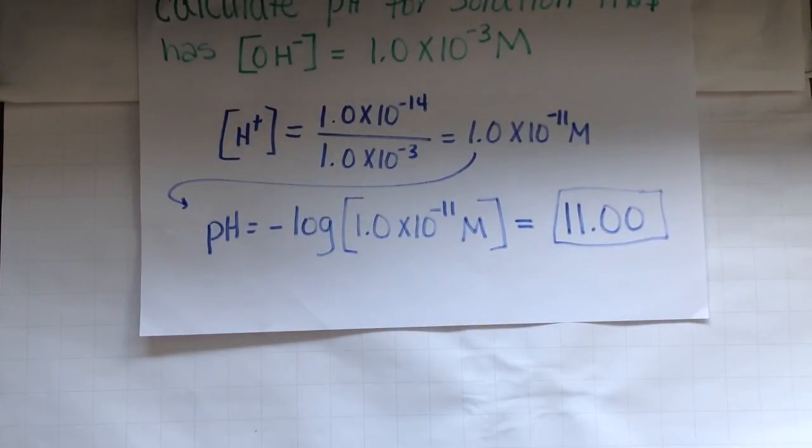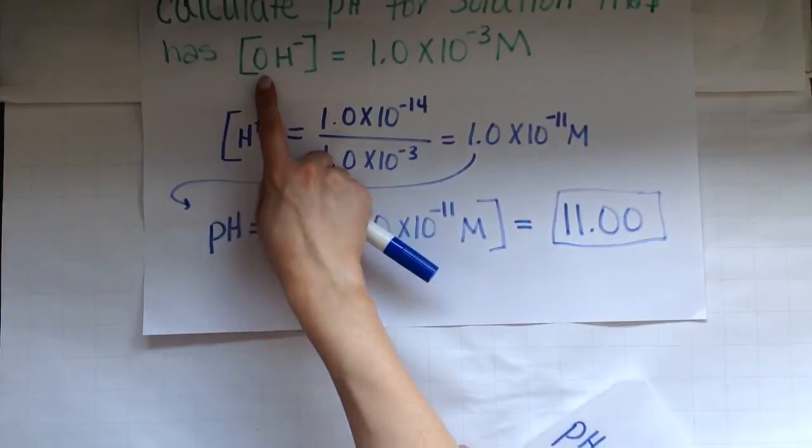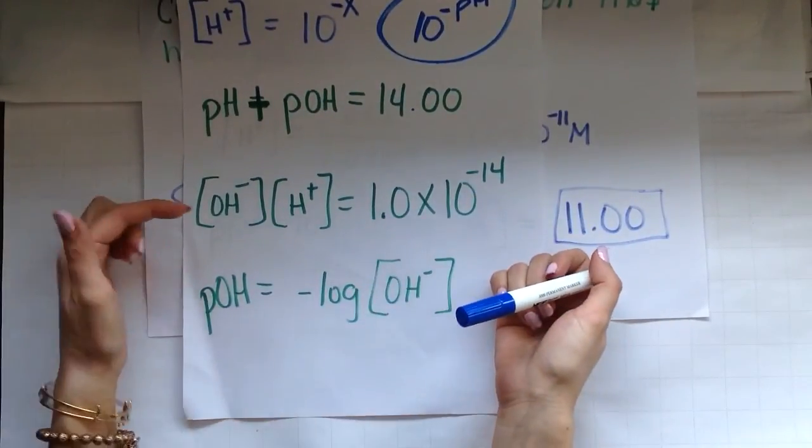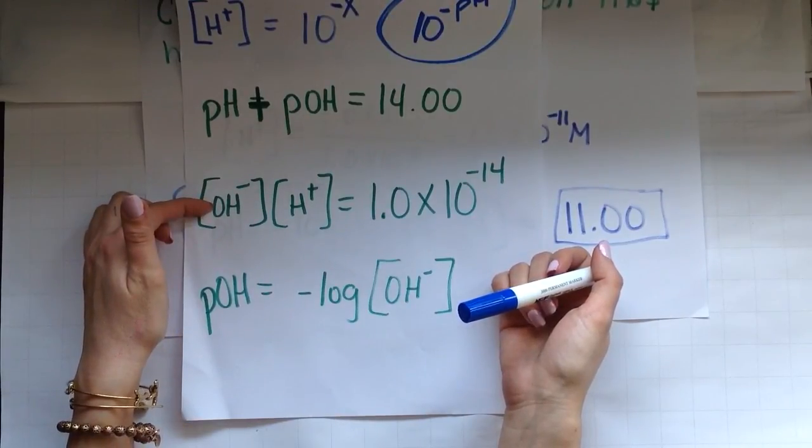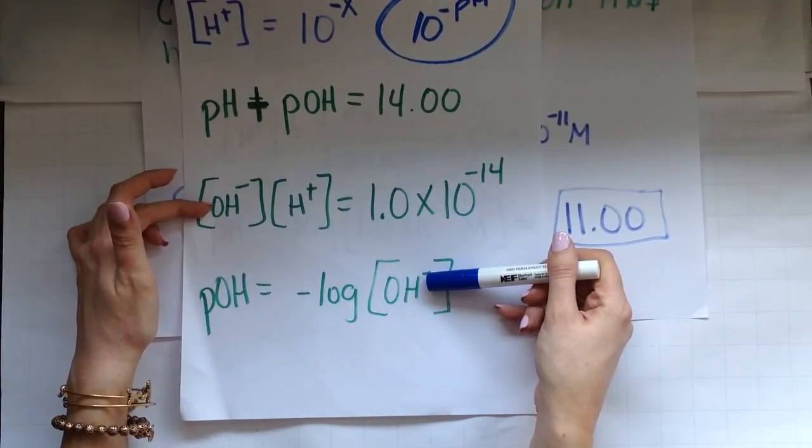Let's look at our last problem seen here. There's many problems you can do. Here's another example. Calculate the pH for a solution that has a hydroxide concentration equal to 1.0 times 10 to the negative 3. I'm going to do this in two steps. Again, sometimes there are multiple ways you can do this. So here's the way I'm going to solve for this. So I look here and I say, I have an OH value. Which equations have OH in them? OH is seen here. OH is seen here. So I can use either one of these equations. Does it matter which one?